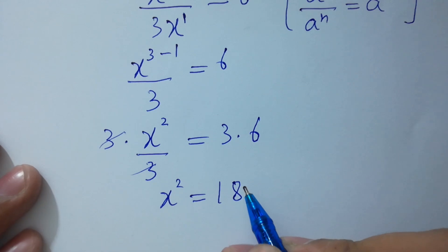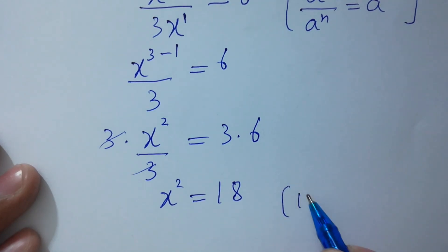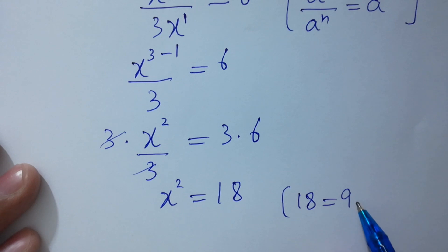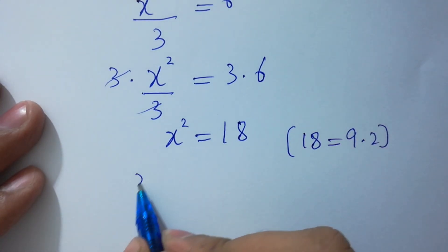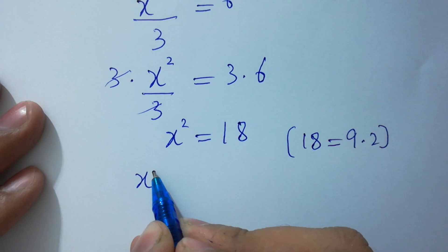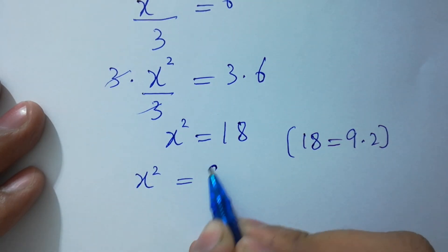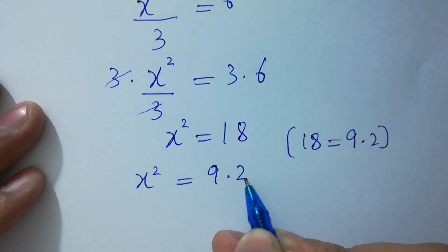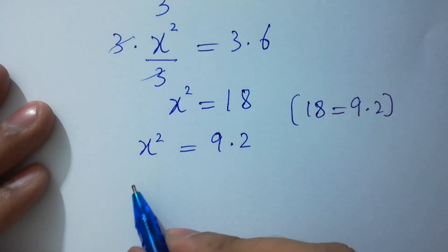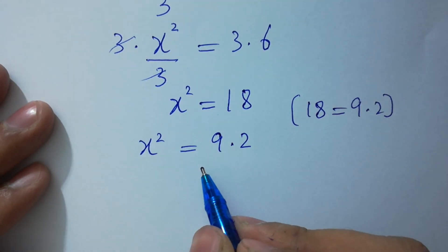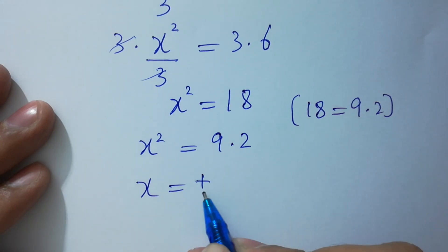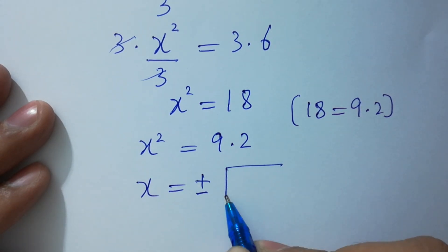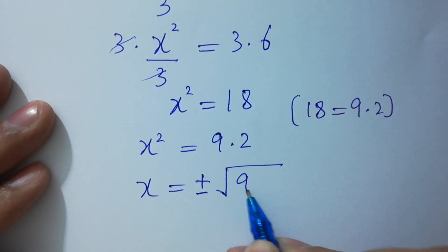We have x squared equal to 6 times 3, which is 18. Since 18 equals 9 times 2, x squared equals 9 times 2. Now take the square root on both sides.